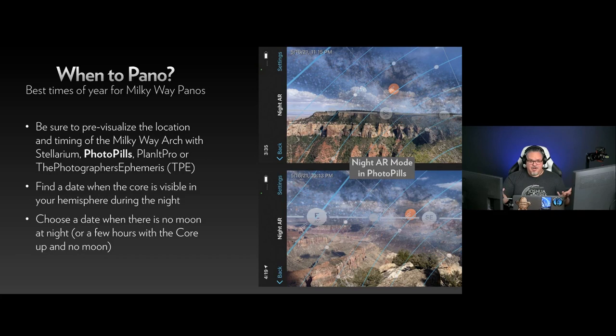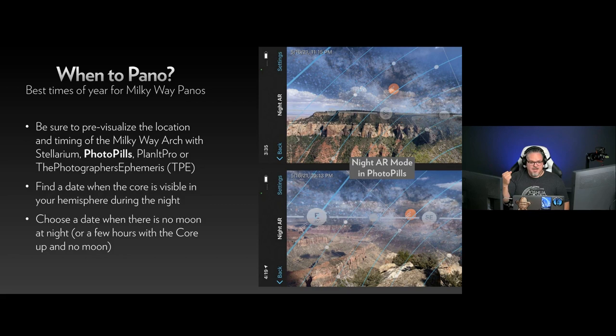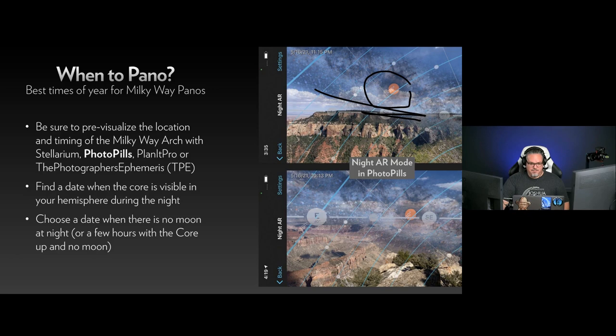Since we're here to talk about Milky Way panoramas, I wanted to talk about the best times of year to shoot. You should be able to pre-visualize your location using apps ahead of time. I'm not going to go into a lot of Photo Pills detail — there's a ton of free education on Photo Pills on National Parks at Night and the Photo Pills website — but I use Photo Pills. There's other apps like Stellarium, Planet Pro, or The Photographer's Ephemeris. They all help you plan to know where the Milky Way will be and at what time. On the right hand side of my screen you can see the core and that it's going to be coming through this scene at 11:15 PM.